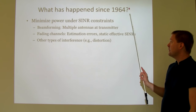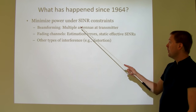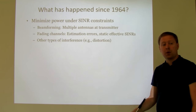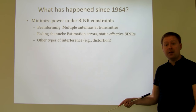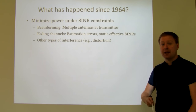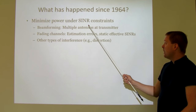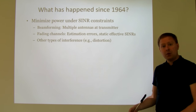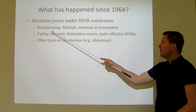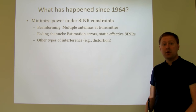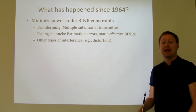Since then, people have looked into the same problem under more general assumptions. For example, minimizing power under SINR constraints when you have beamforming — where the transmitter has multiple antennas and can assign different amounts of power and phases to different antennas to direct signals in different directions. With more variables to optimize, it's not a linear program anymore, but it can still be formulated in an efficiently solvable way. You can also take fading channels — channels that vary over time — into account, where you don't know the channel gains perfectly and estimation errors must be considered.